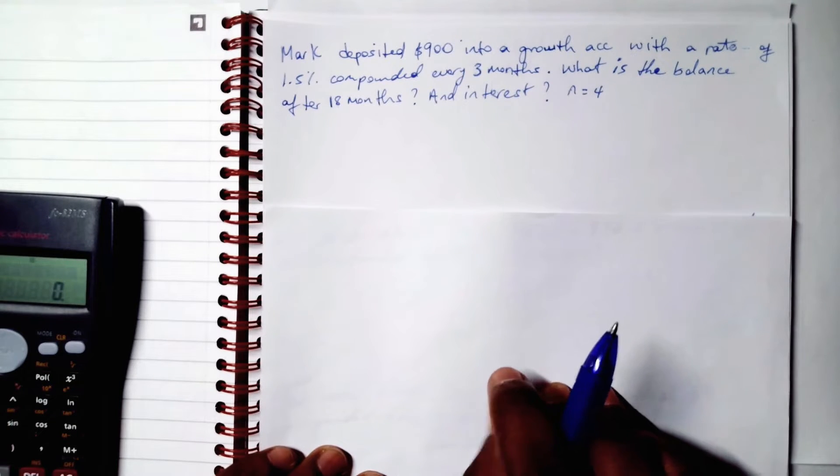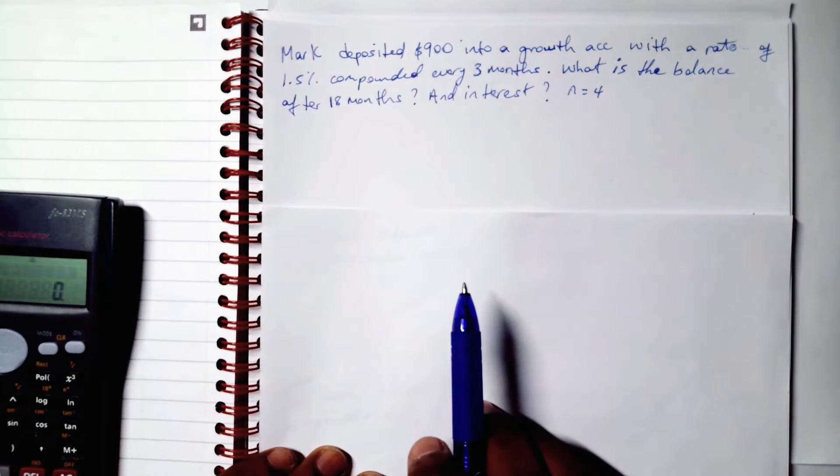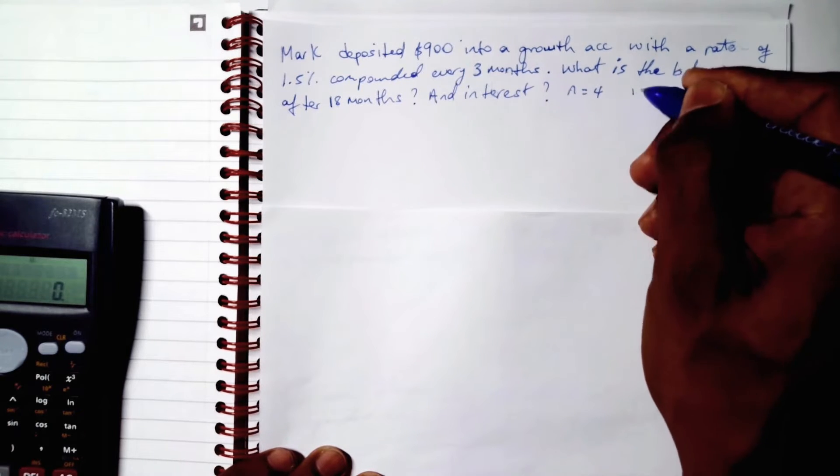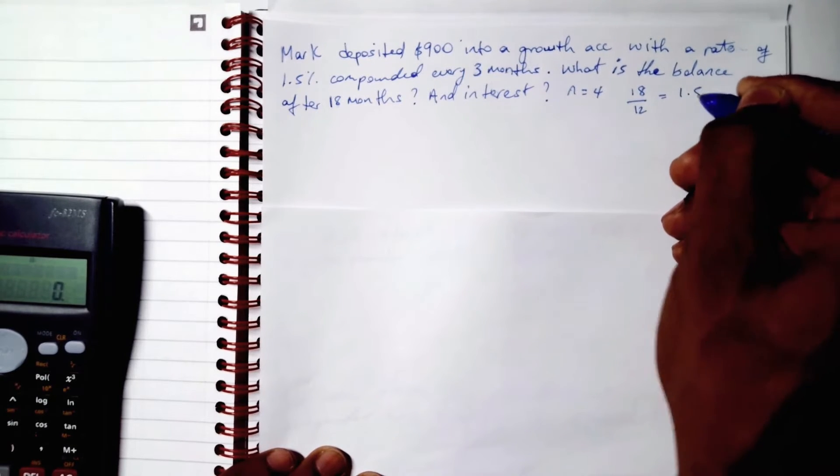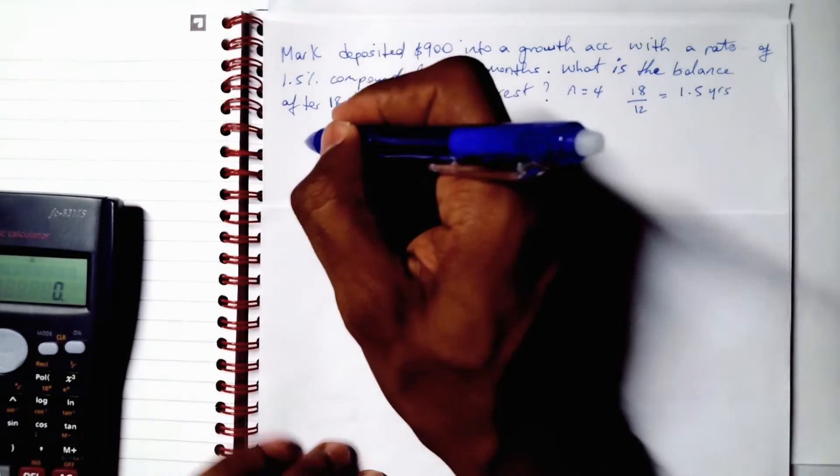Cool. So let us always remember to convert our months into years. Always, always. So we're going to convert our 18 months into years which is going to be 1.5 years. All right. Now let us calculate our A.